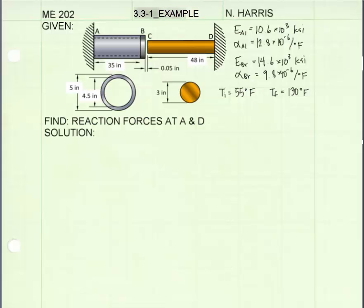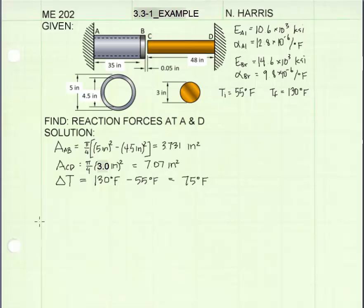The first thing I'm going to do is find the cross-sectional areas of the two members. Now I need to find the change in temperature, delta T. Delta T is equal to the final temperature, 130 degrees Fahrenheit, minus the initial temperature, 55 degrees Fahrenheit. That gives us the difference, delta T, of 75 degrees Fahrenheit.